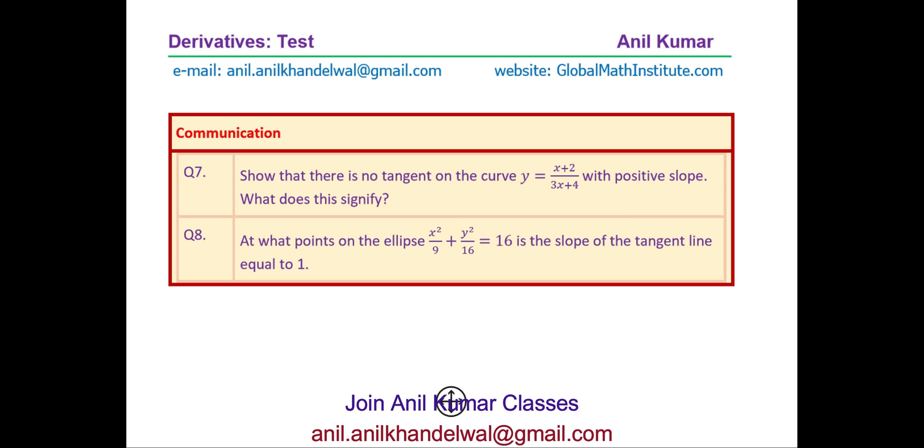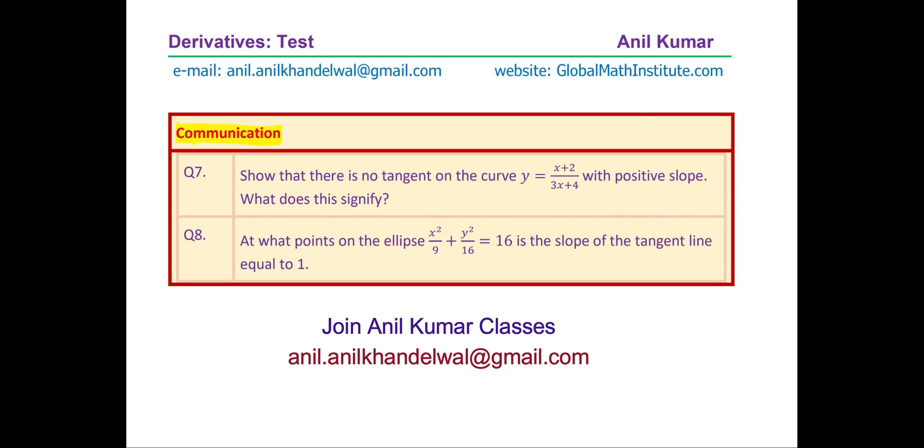The second set, we have only two questions based on communication skills. Question number seven here is: show that there is no tangent on the curve y equals x plus 2 over 3x plus 4 with positive slope. What does this signify?